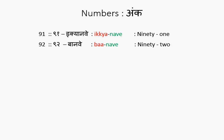Teen is 3 — Tirepan, remember? So teen gets converted to Tiraanve. Tiraanve is 93. Ikyaanve is 91. Baanve is 92. Tiraanve is 93.